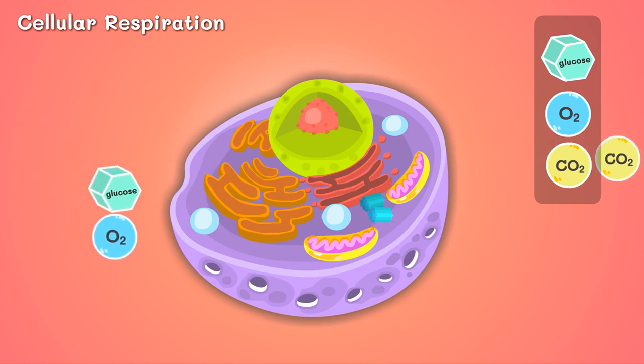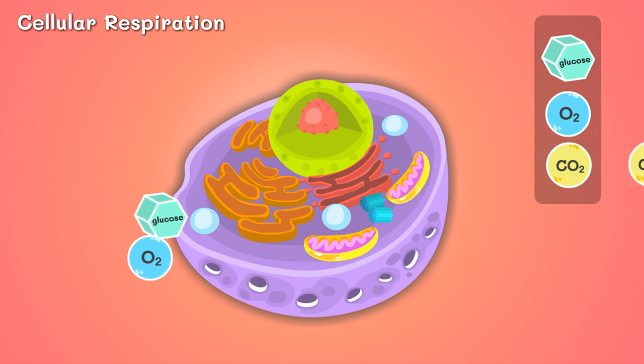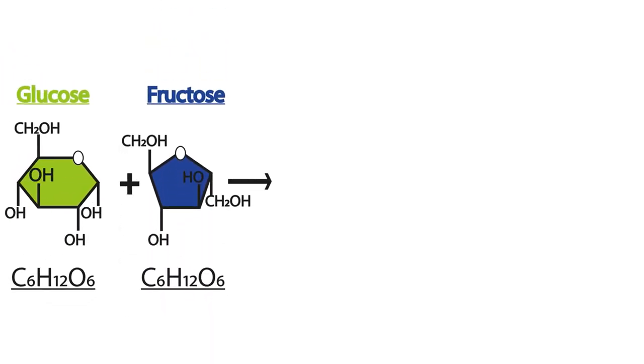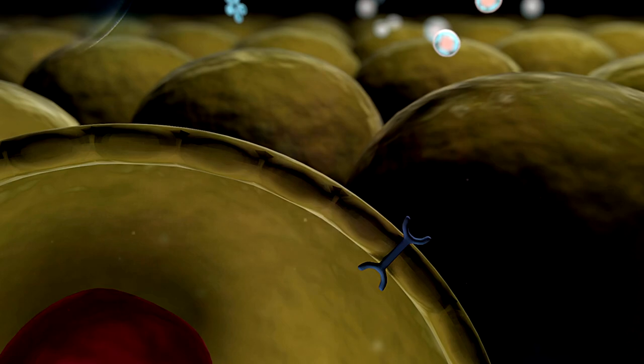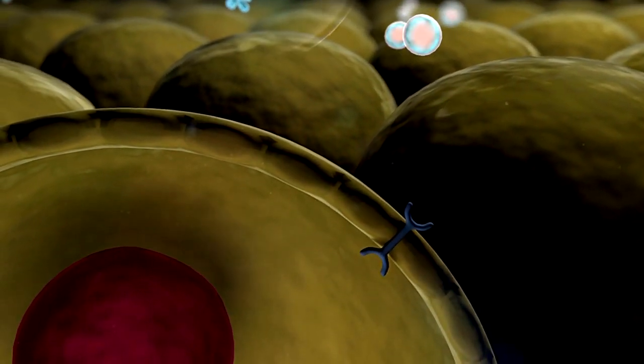But instead of coal or gas, they use something much more interesting. A cocktail of glucose, oxygen, and a little bit of magic, known as cellular respiration. Here's the deal. Your body breaks down food into glucose, a type of sugar. This glucose enters your cells, and that's where the mitochondria step in.